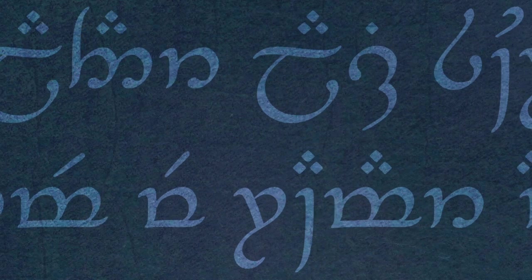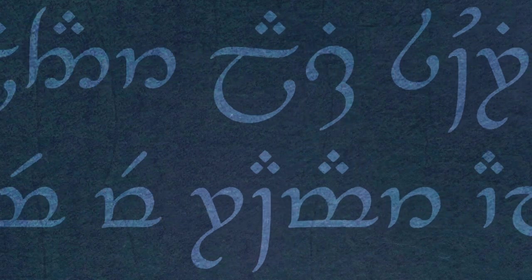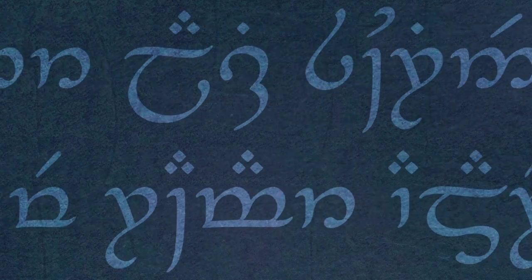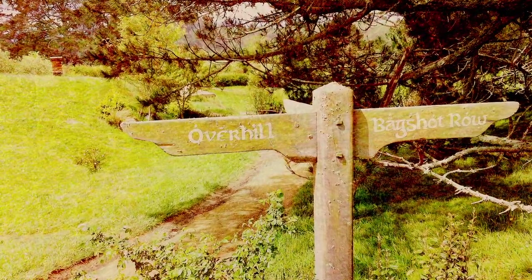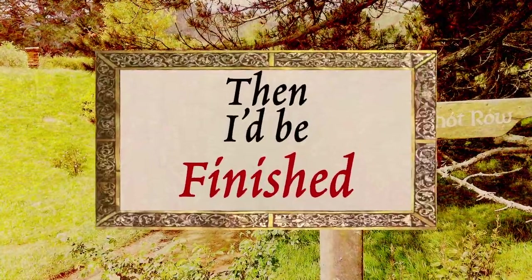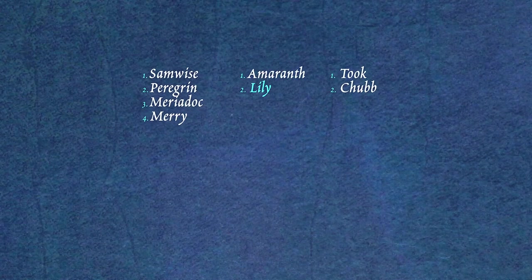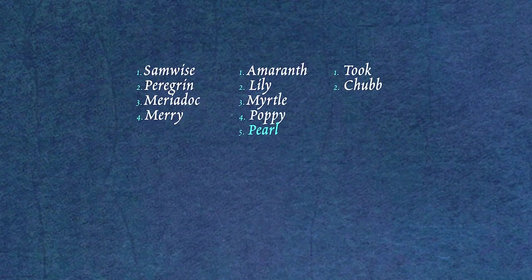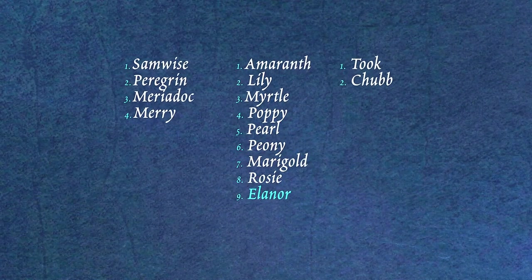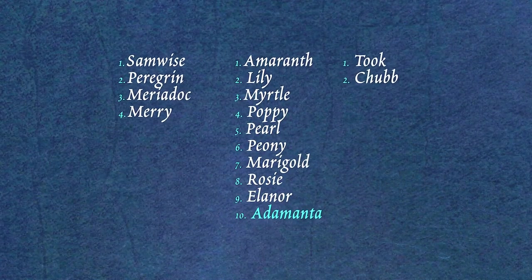Both the regular name generators were working well enough, so the last thing I needed to do was to complete my irregular lists. I added Amaranth, Lily, Myrtle, Hoppy, Pearl, Peony, Marigold, Rosie, Eleanor, and Adamanta.